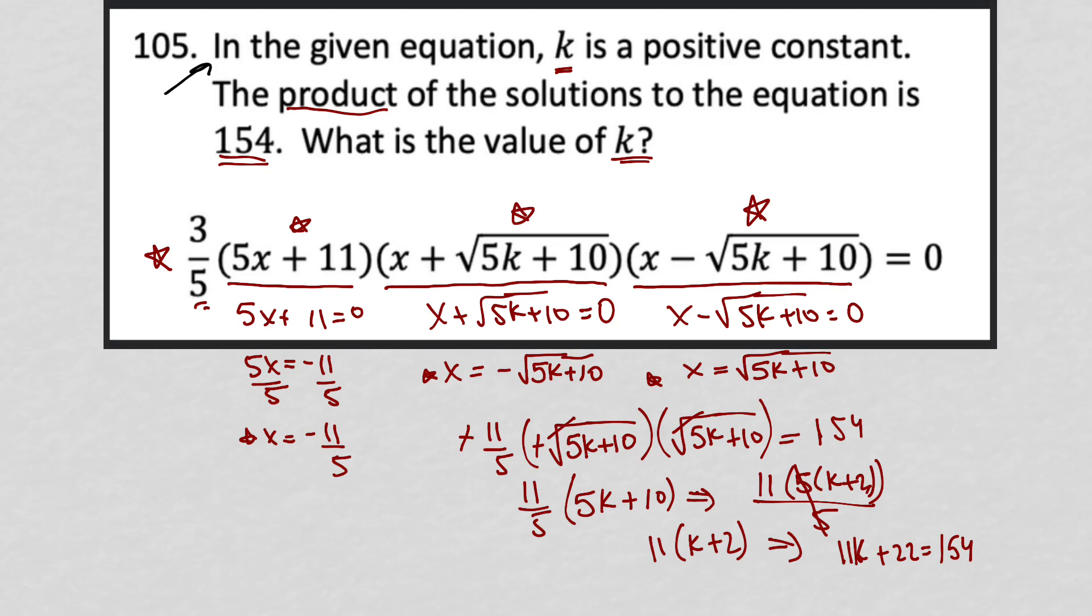So we're almost done. So 11k plus 22 equals 154, subtract 22 from both sides of the equation, I now have 11k is equal to 132, divide both sides by 11, and I have k equals 12 as my final answer.